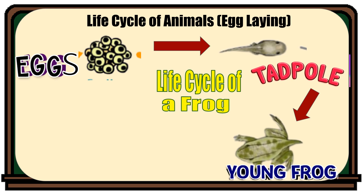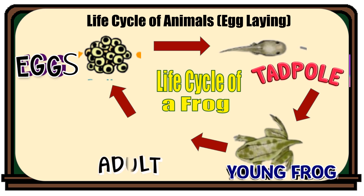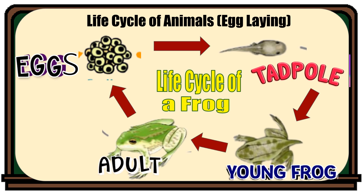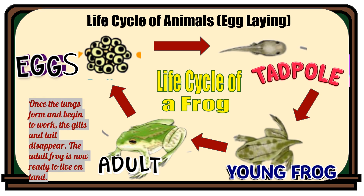The young frog grows into an adult frog. Once the lungs form and begin to work, the gills and tail disappear. The adult frog is now ready to live on land. This series of transformation in the life cycle of a frog is an example of metamorphosis — a process of changing shape and form.